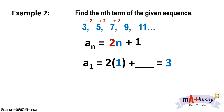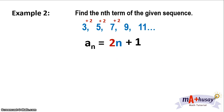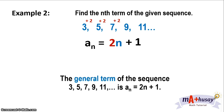For n equals 1, a sub 1 is 3 — that's correct. What if n is 2? 2 times 2 is 4, plus 1, gives you 5 — that's the second term. When you substitute n equals 3, 3 times 2 is 6, plus 1, gives you 7. So a sub n equals 2n plus 1 holds true. The general term of the sequence 3, 5, 7, 9, 11, and so on, is a sub n equals 2n plus 1.